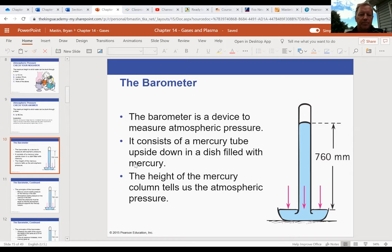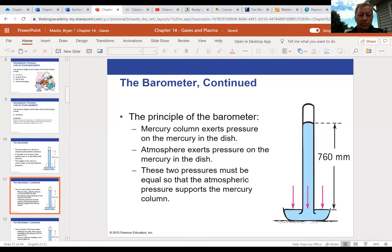And the height of the mercury in the column tells us the atmospheric pressure. So, how does this thing work? Well, the mercury column is pushing down. It's exerting a force, force of gravity.